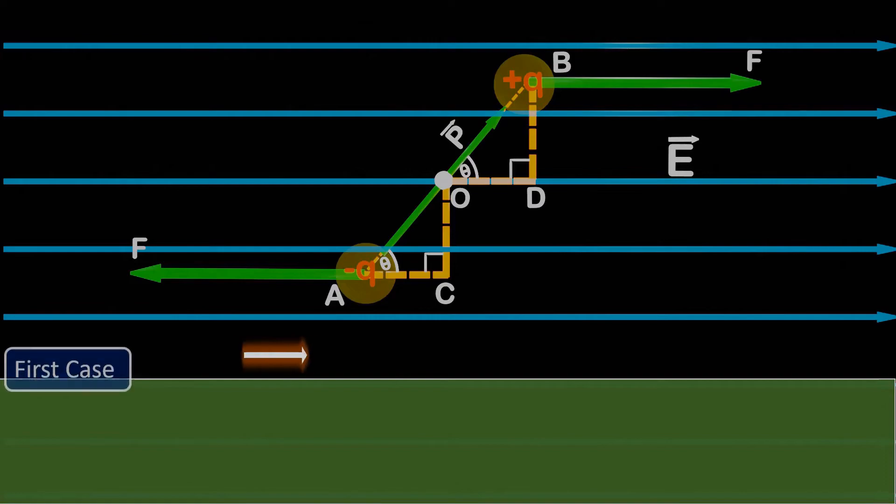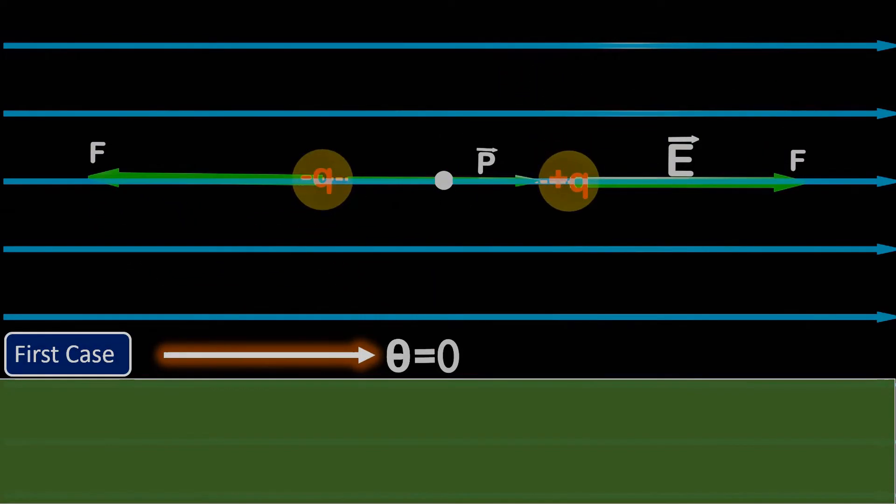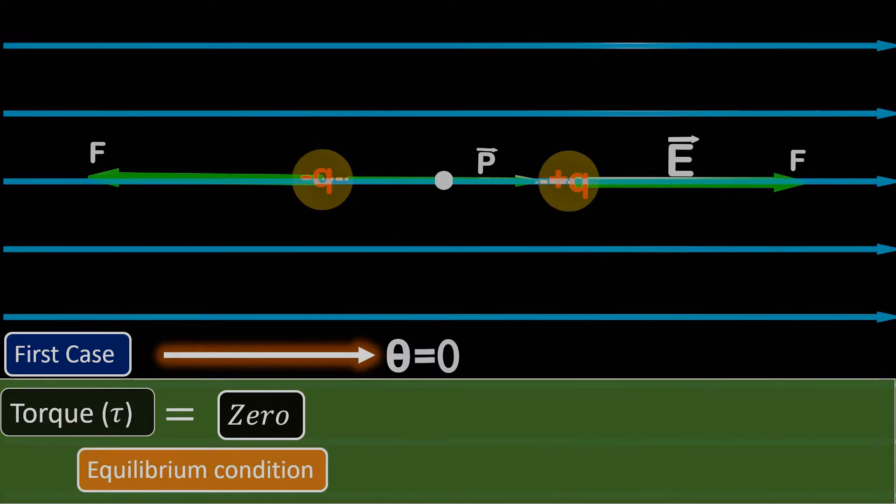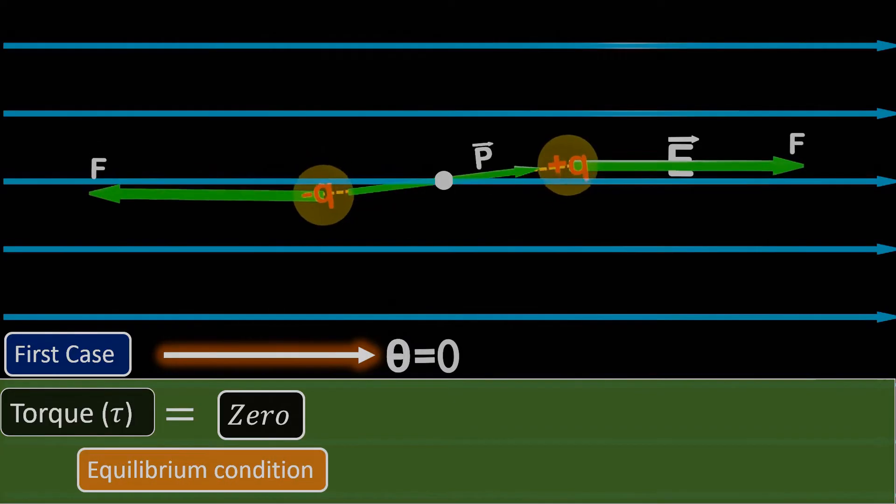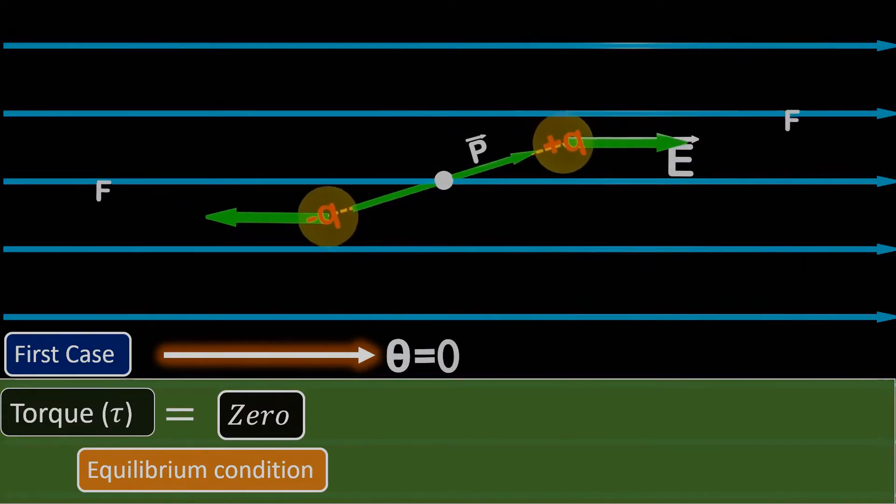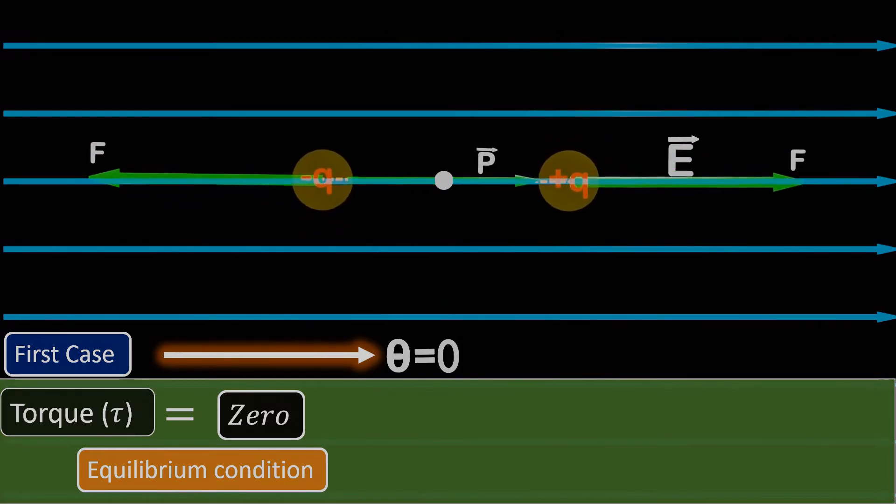The first case is when the angle theta between P and E is 0 degrees. We have formula for torque, that is, PE sin theta. So if we substitute theta as 0 degrees, we get torque equals 0, as sin 0 is equal to 0. We can also call this condition the equilibrium condition. In this case, if we disturb and rotate the dipole, forces will start acting on both positive and negative ends of a dipole, bringing the dipole back to its original position. This type of equilibrium is called stable equilibrium.